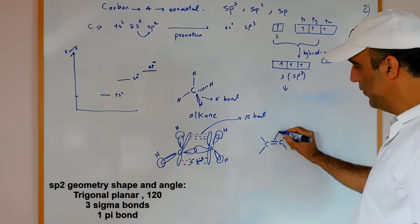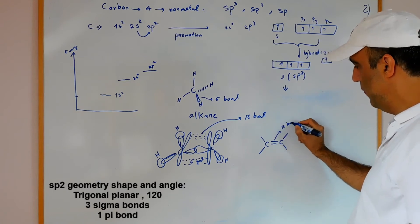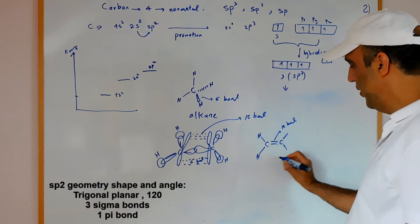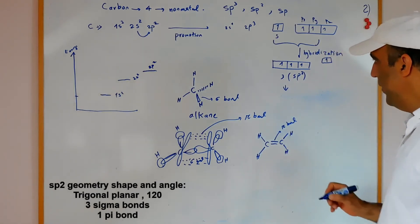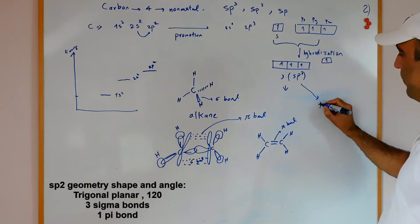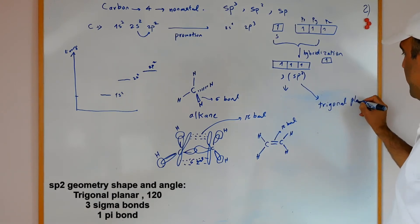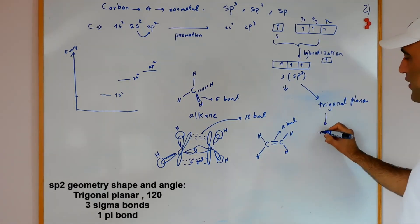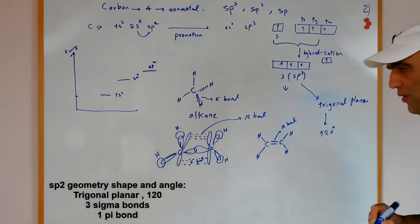The other bond is sigma. In sp2, the shape is trigonal planar and the angle is 120 degrees.